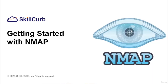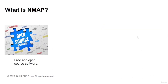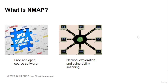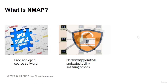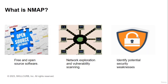Hello everyone, welcome to this lecture on Network Mapper, which is also known as Nmap. Nmap is a popular, free, and open source tool used for network exploration and vulnerability scanning. It can be used to discover hosts and services on a network as well as identify potential security weaknesses. Nmap uses various techniques such as port scanning, OS detection, and version detection to gather information about a target network.